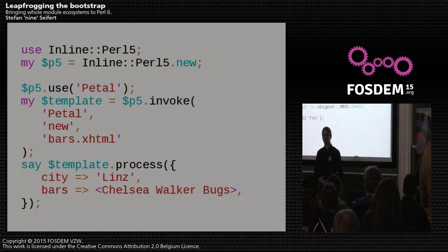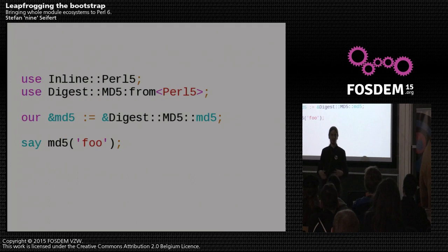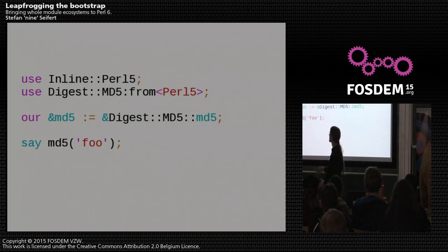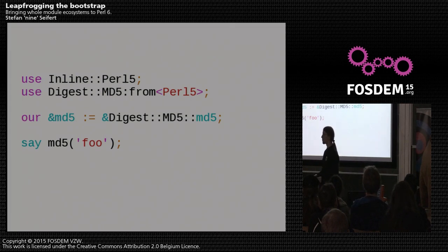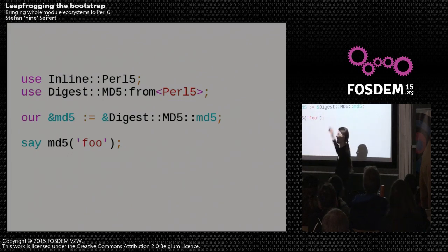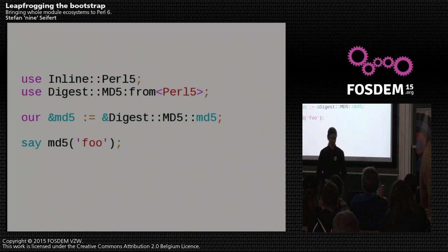A module may hook into the use mechanism, and we can actually use the use statement to load Perl 5 modules. We don't even need the P5 object anymore. The thing that does not yet work is importing symbols that the loaded module exports, so I'm doing this manually. But other than that, you almost cannot tell the difference from a native Perl 6 module.